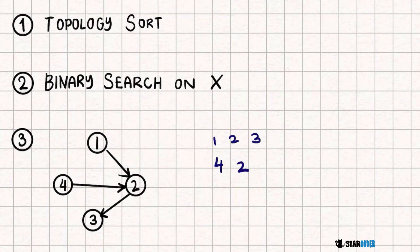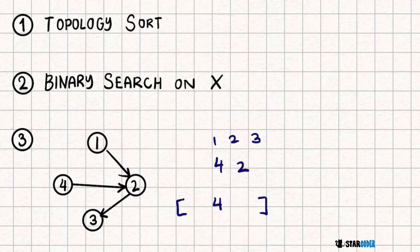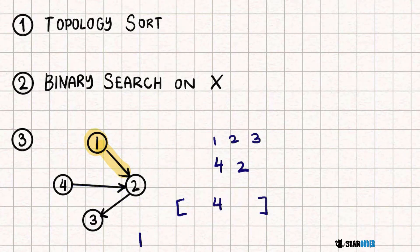Simulating the example: our topological sort data structure first pushes in all nodes with nothing pointing to them — the cows we can milk right now with no obligations. In this case, that would be 1 and 4. We pop the first one off, add it to our milking order, and remove it and its edges. We then check its child; if the child still has an edge pointing to it, we continue on. Then we pop the next one, which is 4.